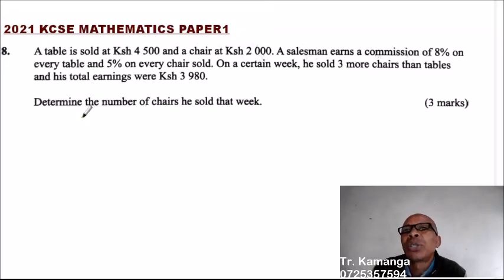Question number eight. A table is sold at 4,500 Kenyan shillings and a chair at 2,000 Kenyan shillings. A salesman earns a commission of 8% on every table and 5% on every chair sold. On a certain week, he sold three more chairs than tables and his total earnings were 3,980. Determine the number of chairs he sold that week.